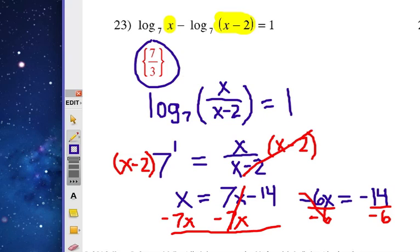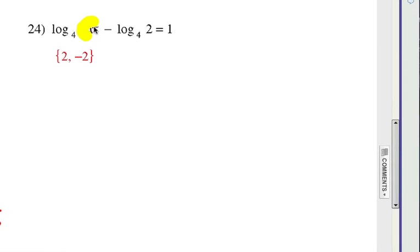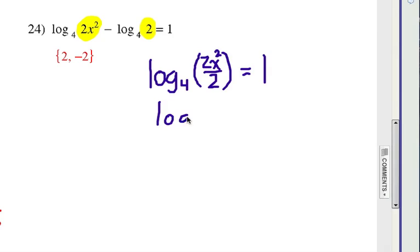All right, let's look over at number 24. So we have log base 4 of this expression minus log base 4 of this expression, which is just a 2. And because of this subtraction, we know that's going to be another quotient. It becomes log base 4 of 2x squared over 2. Those 2s are going to cancel out, aren't they? So really, we now have log base 4 of x squared equals 1.